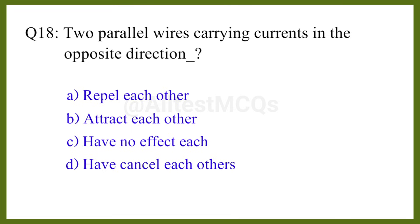Question number eighteen: Two parallel wires carrying currents in the opposite direction — the correct answer is option A: repel each other.